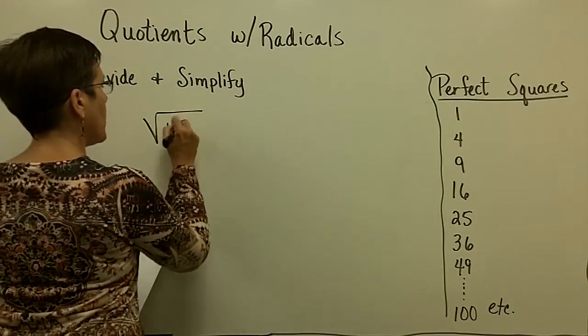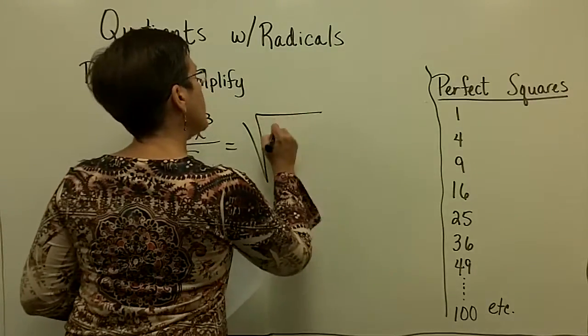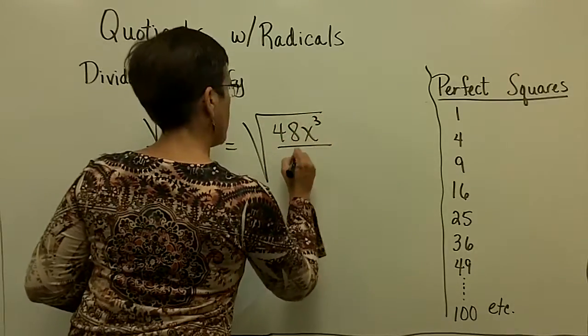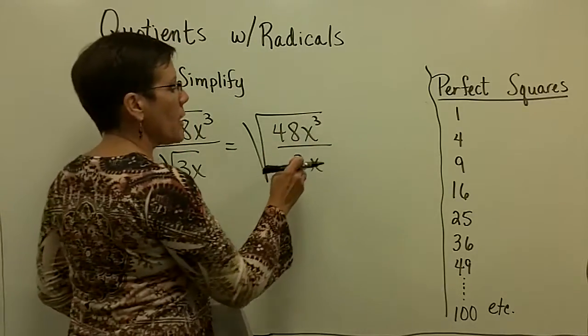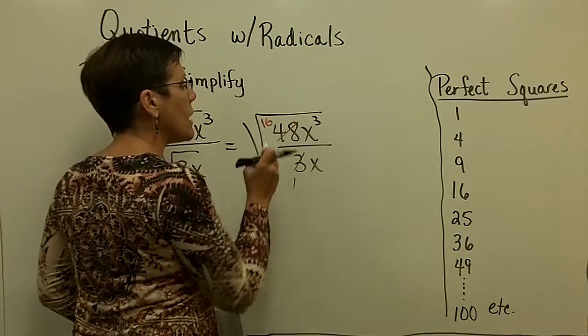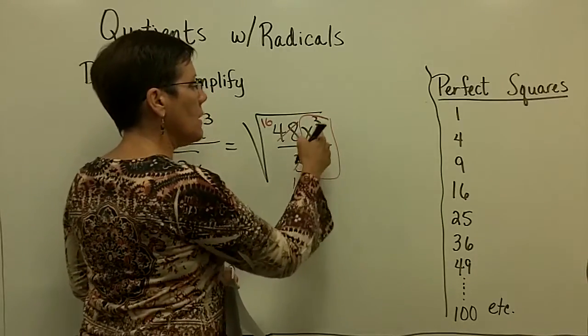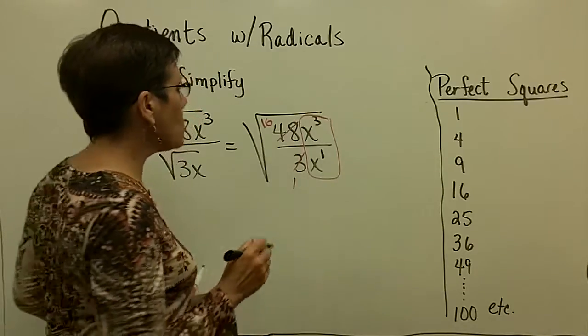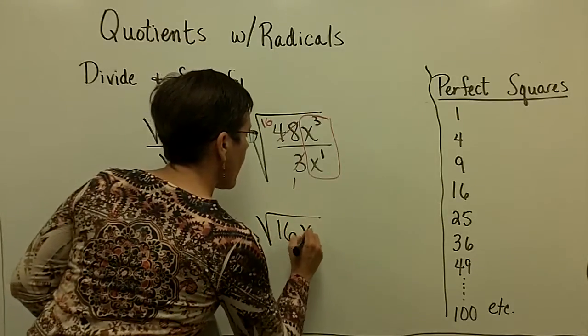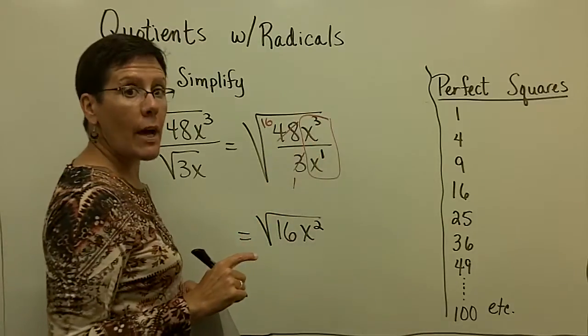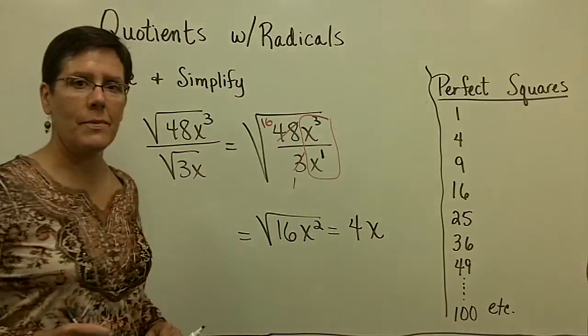So let's say I had 48x cubed in the numerator and 3x in the denominator. Again, please think of it like that. And remind yourself that the numerical factors, I can reduce those fractions by dividing 3 into here once and into here 16 times. But please remember these bases are alike. So you subtract their exponents. So a 3 minus a 1 gives you a 2. And that value will be in the numerator. So what you really have here is just the square root of 16x squared. Because this is a 1 and this x divided into x cubed x squared times. My answer then is 4x, because I can reduce that last piece.